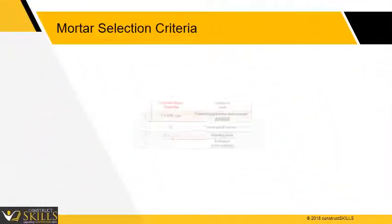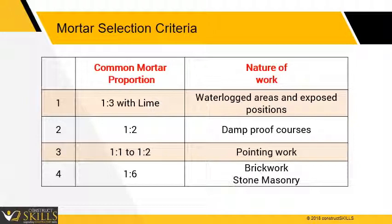The mortar proportion depends on the nature of work. A 1:3 proportion with lime is used for waterlogged areas and exposed positions. A 1:2 proportion is used for damp proof courses. A 1:1 to 1:2 proportion is used for pointing work. A 1:6 proportion is used for brickwork and stone masonry.